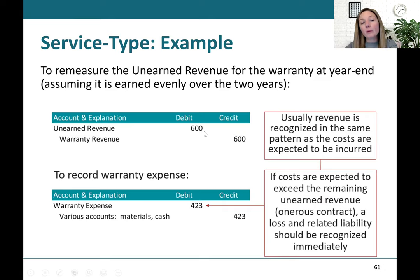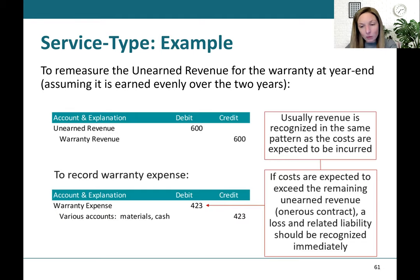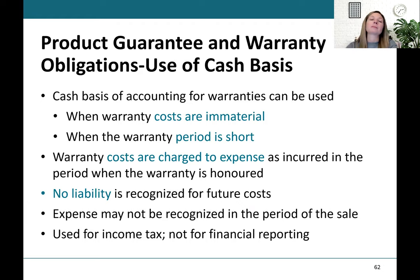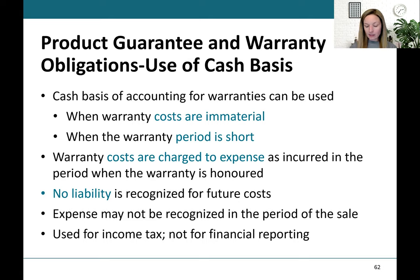In this service type warranty scenario, warranty revenue appears at the top line and warranty expense is also shown, so it's presented gross — net income reflects the difference between $600 and $423. Also worth noting: if the warranty is completely immaterial or the warranty period is very short — like 30 days — some companies account for that on a cost basis. This can only be done if it's immaterial or for income tax purposes, but not for financial reporting if it is material.